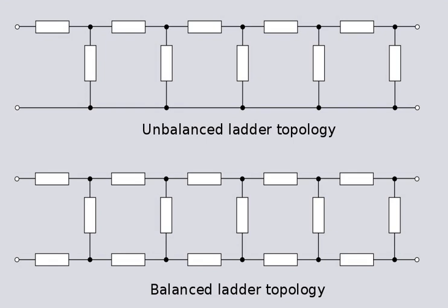Bridged T topology is derived from bridge topology as explained in the Zobel Network article. There is also a twin T topology which has practical applications where it is desirable to have the input and output share a common ground terminal. Connecting together an input and output terminal is not allowable with normal bridge topology, and for this reason twin T is used where a bridge would otherwise be used for balance or null measurement applications. The topology is also used in the twin T oscillator as a sine wave generator.